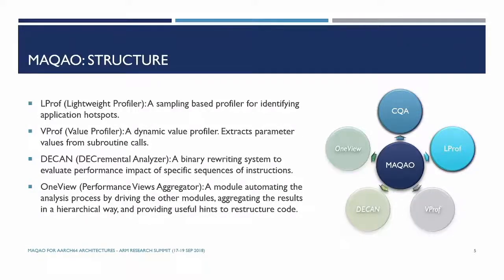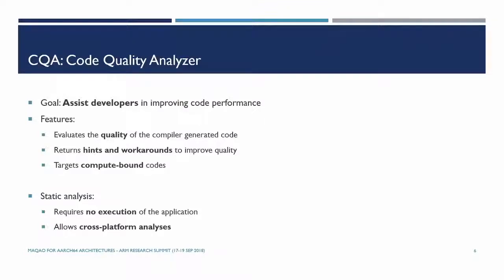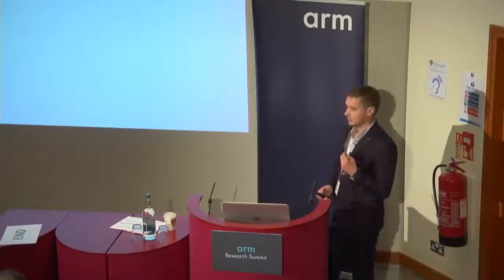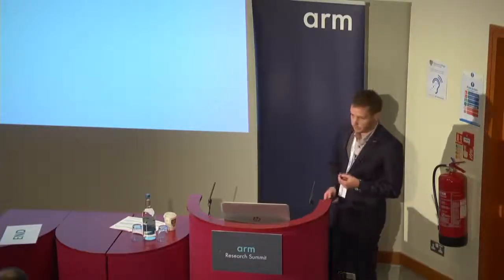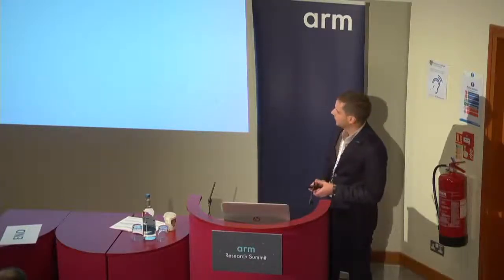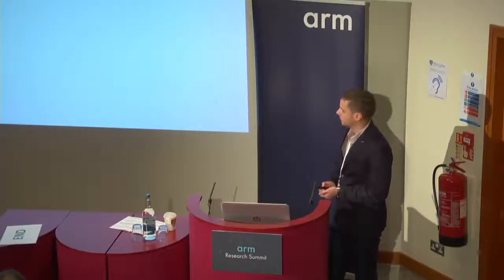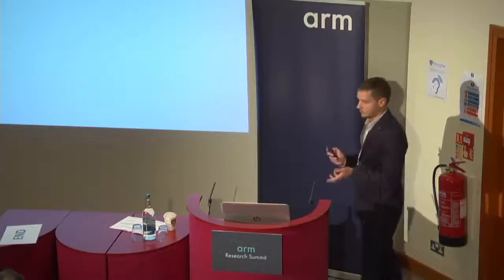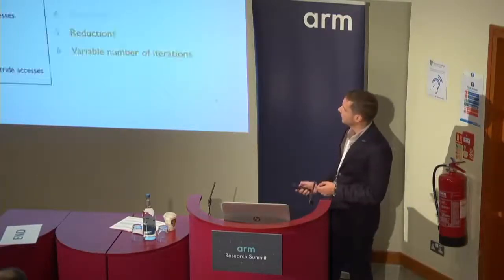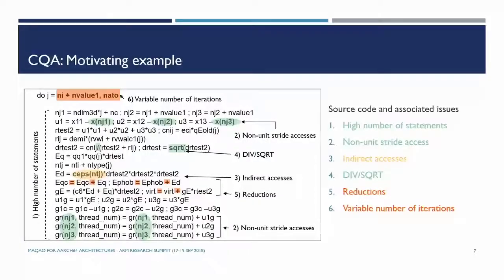And there is CQA, the code quality analyzer. The goal of CQA is to evaluate the quality of compiler-generated code. It targets mainly compute-bound codes and gives hints and workarounds to users to optimize their code. It is a static module, so it does not require execution of your code, which also limits the analysis you can do.